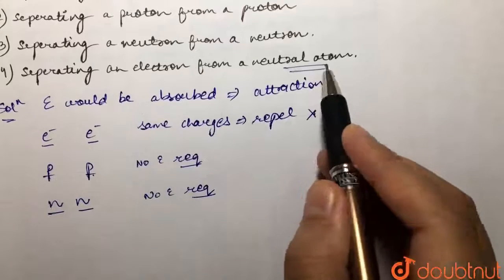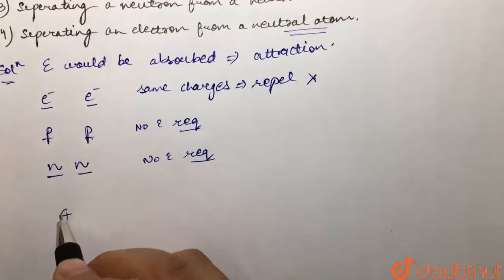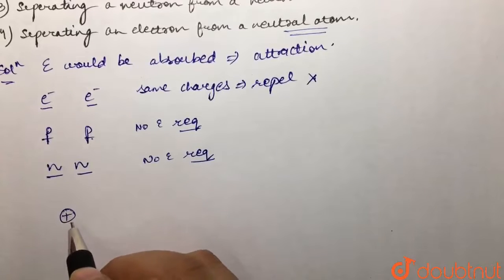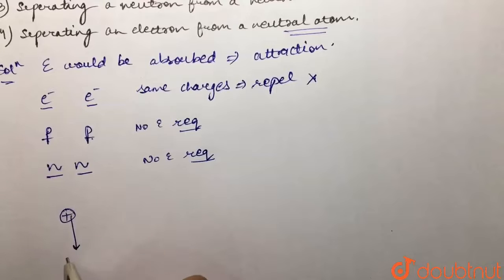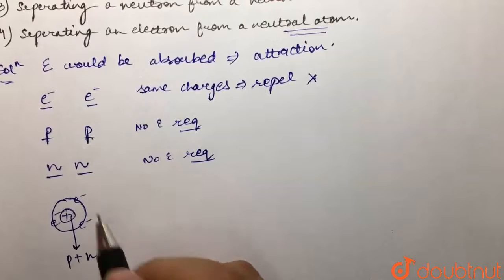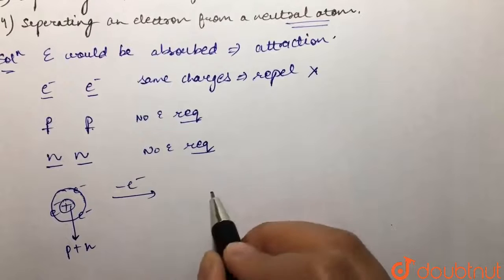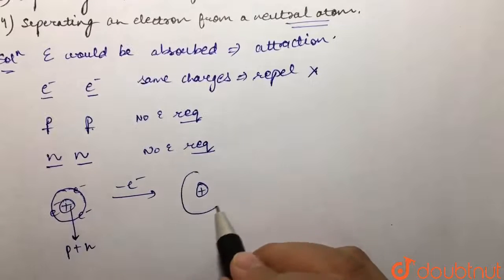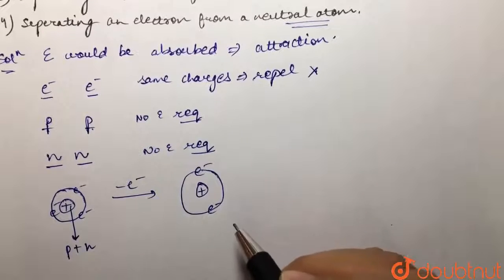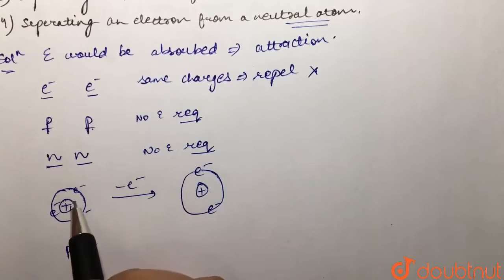The fourth option is separating an electron from a neutral atom. Our atom contains a nucleus that has protons and neutrons in it, and then we have shells that contain electrons. For example, this is our neutral atom — it had three electrons and we are going to remove one electron, leaving two electrons.